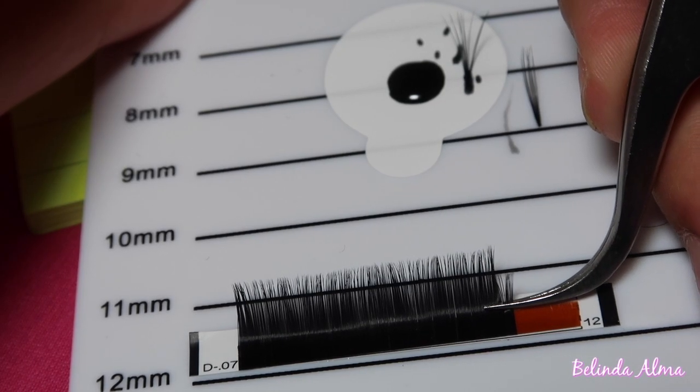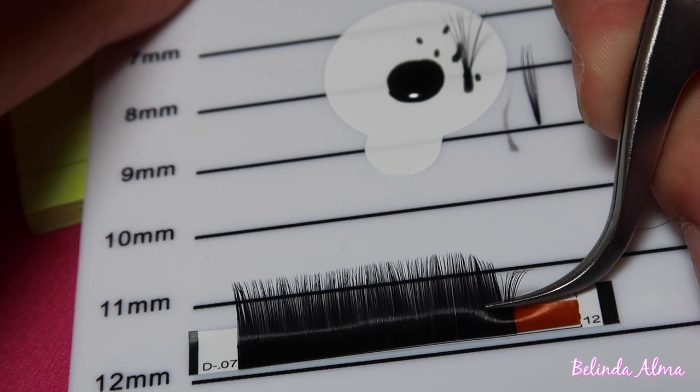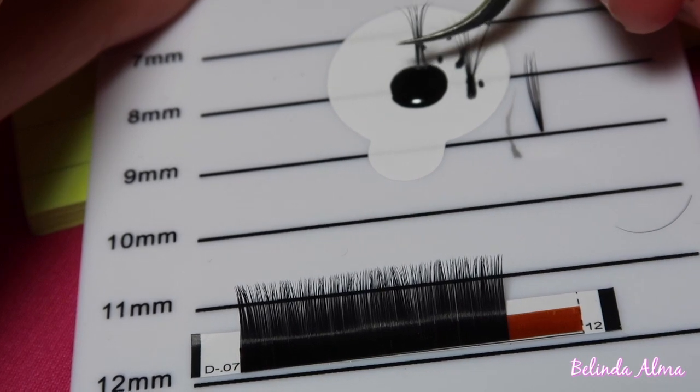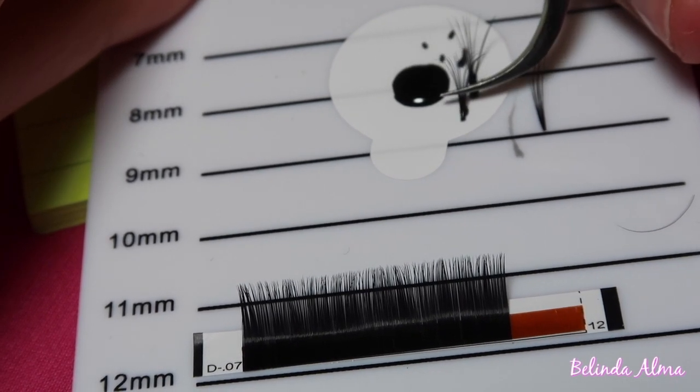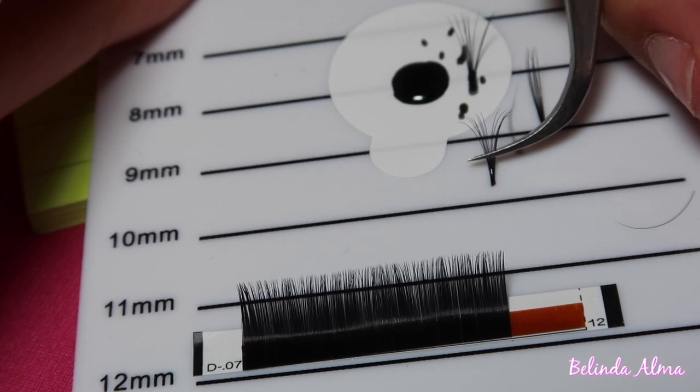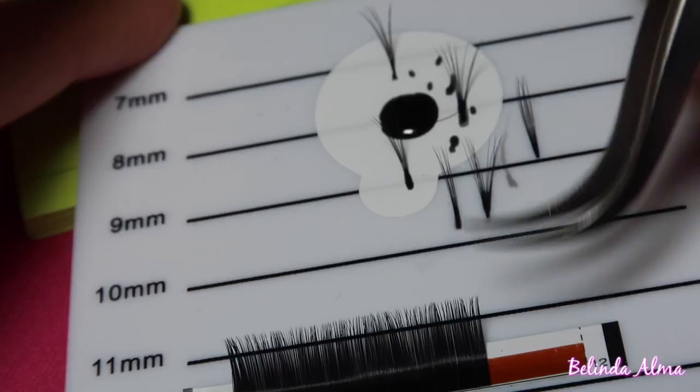It's really easy. Then you dip it in your glue, wipe off the excess glue because you don't want to have too much glue, and then you want to place it on your eyelash. Here I'm not doing that. I don't have a live model, but you always want to make sure that your tweezers are clean.